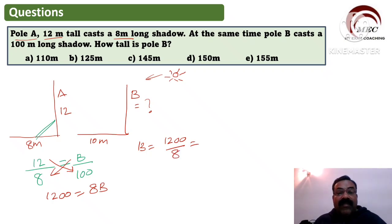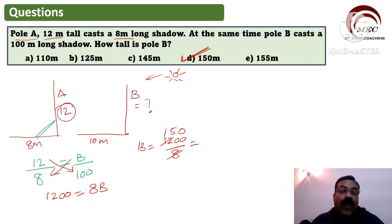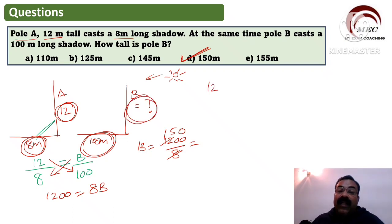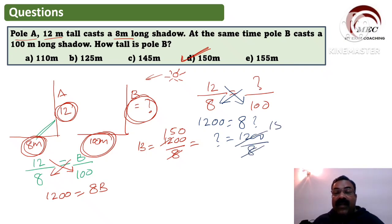So B = 1200 ÷ 8. Simplifying: 1200 divided by 8 gives us 150. Accordingly you can mark the correct option as option D, 150. To summarize: a 12-meter pole makes an 8-meter shadow, so for a 100-meter shadow we set up the ratio, use cross multiplication to get 1200 = 8B, and solve to get B = 150. The answer is 150.